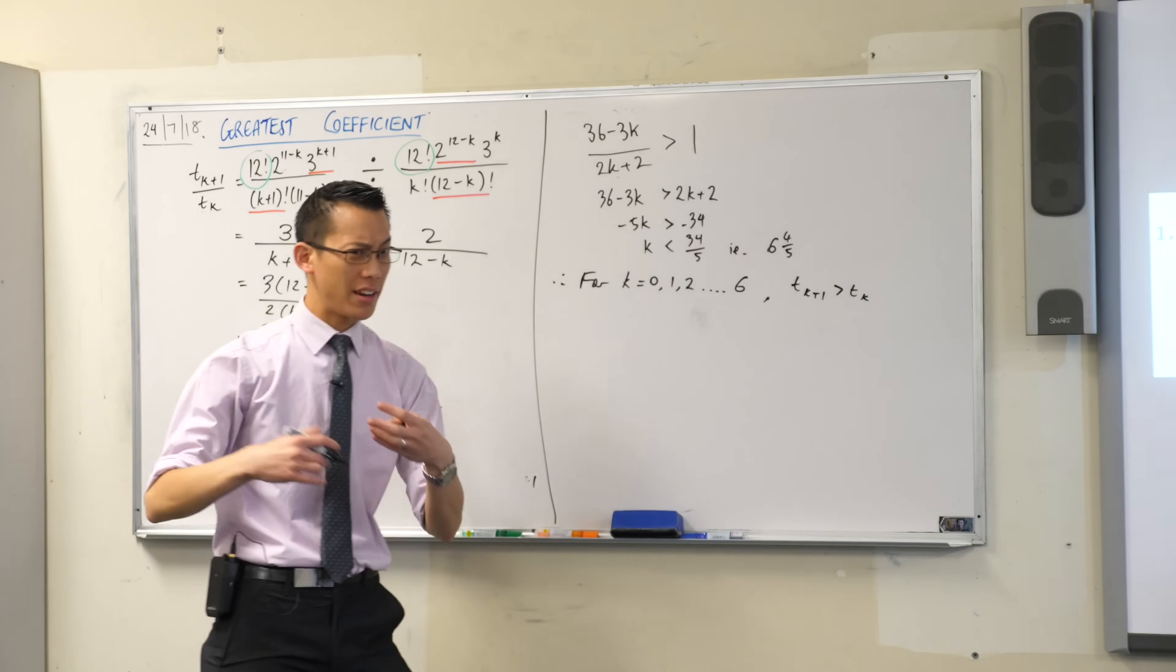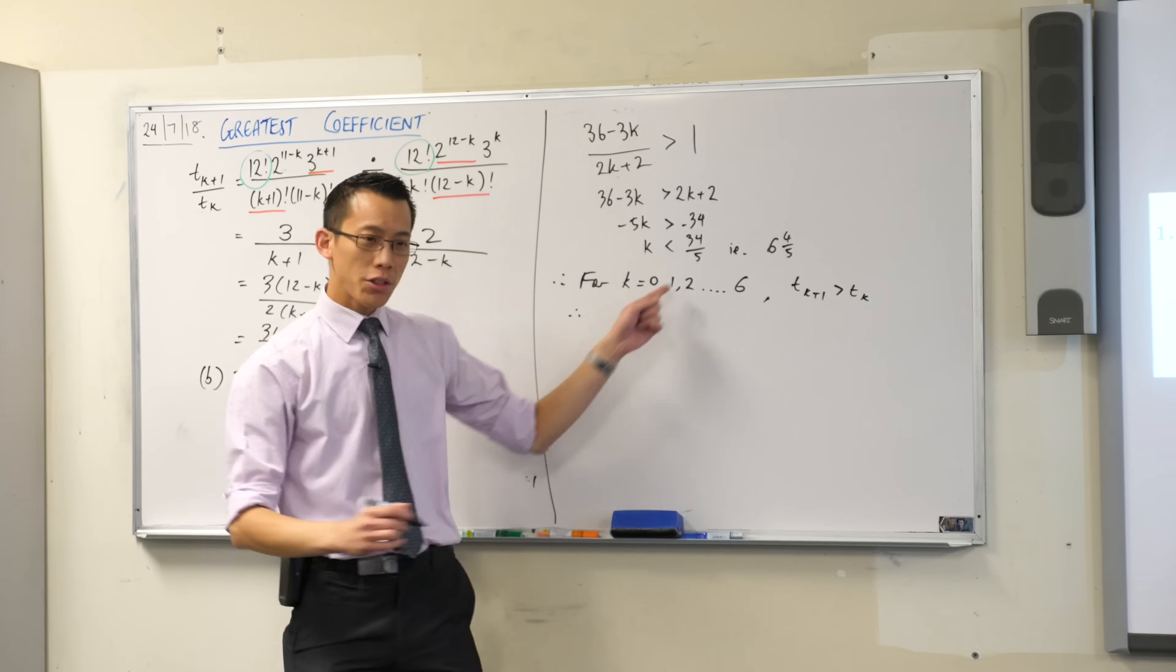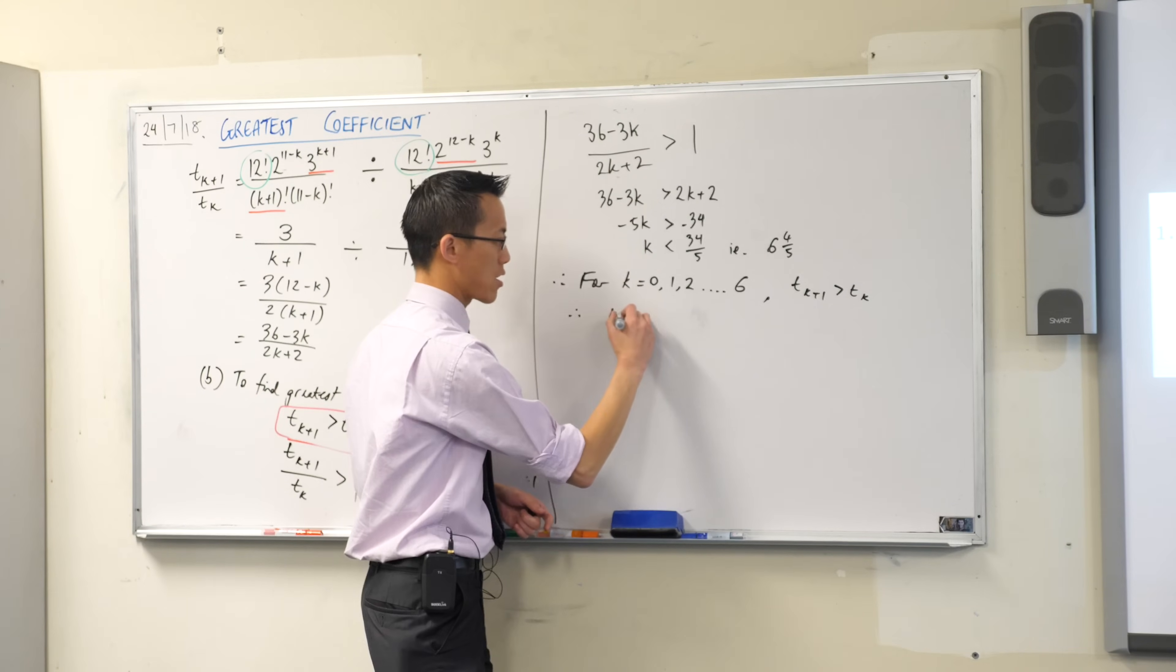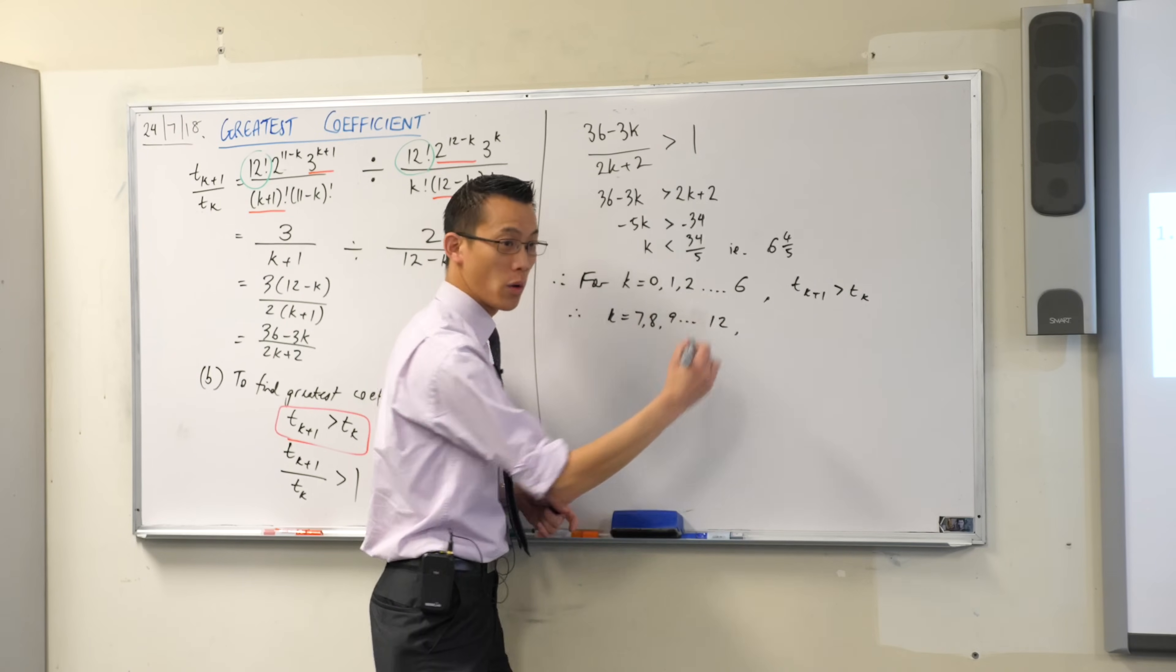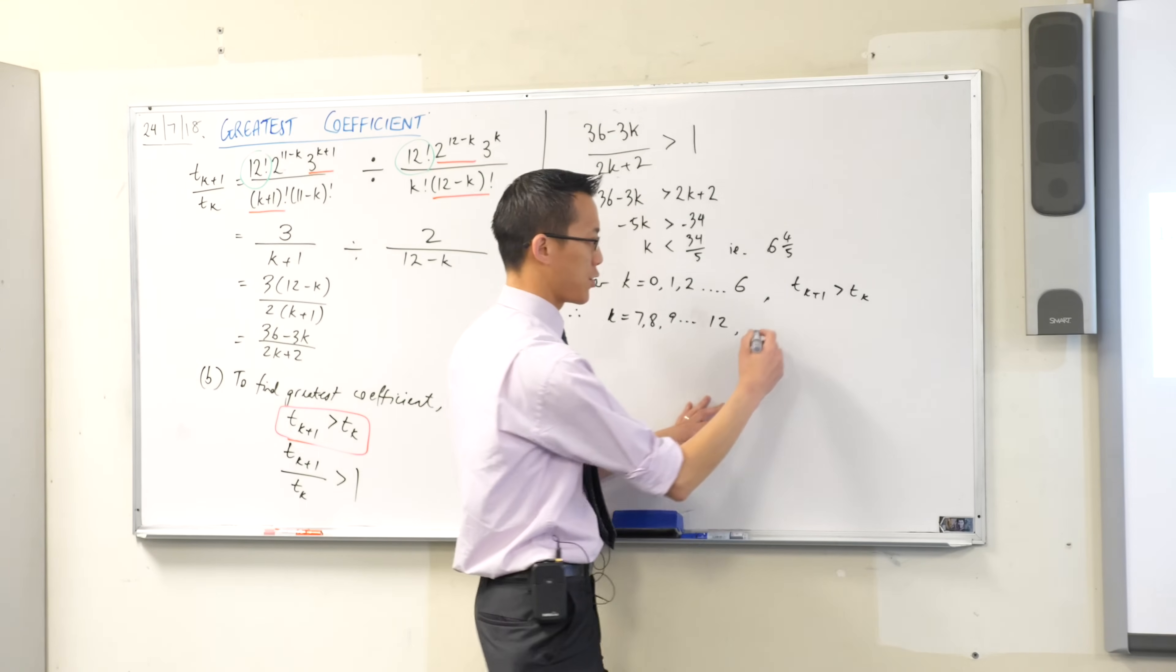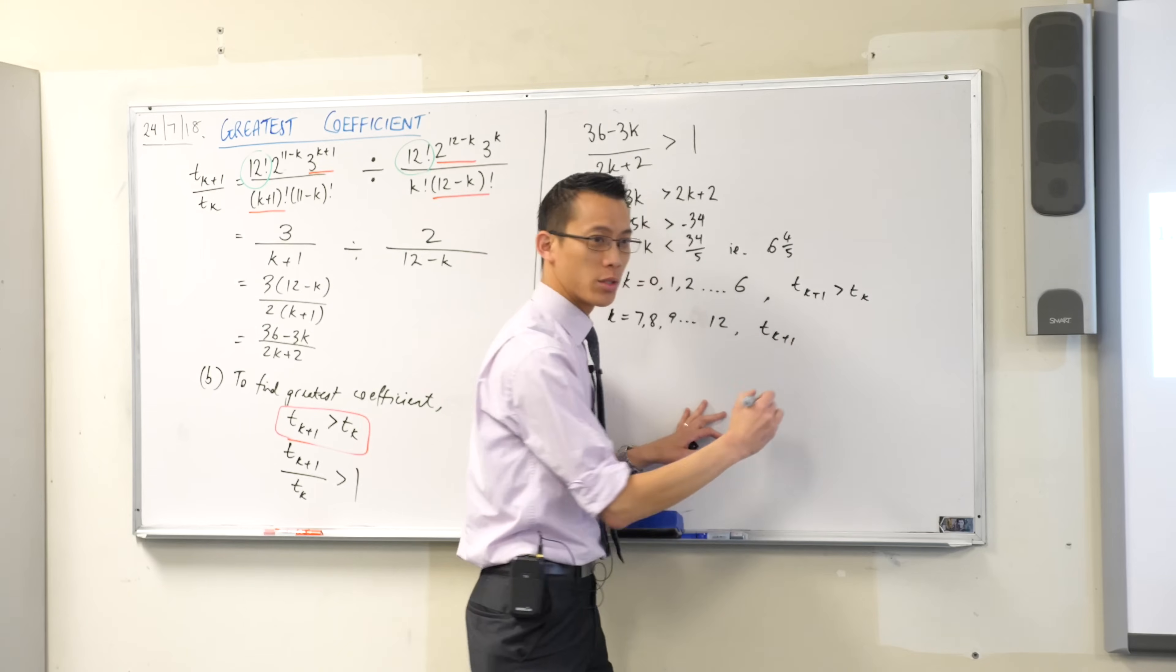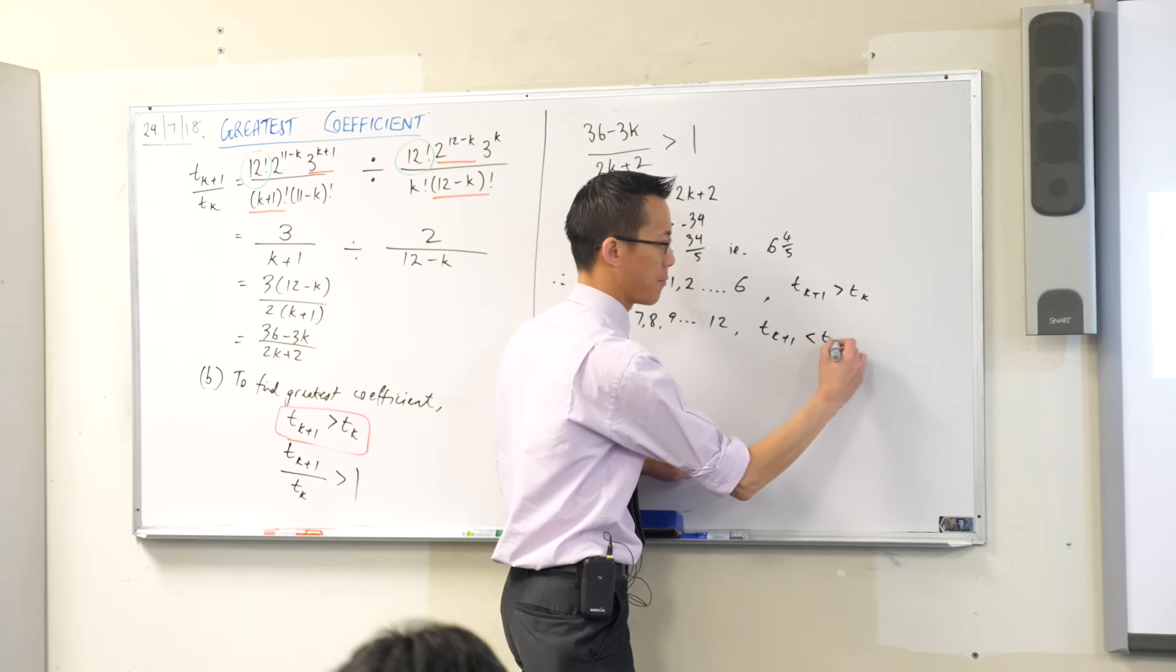Okay, now what I can infer from that, which means, therefore, for all the other values of k, for k equals 7 and 8 and 9 all the way up until 12, this is not true. The opposite is true, right? So the next term afterwards will not be bigger than the term before it. It will be smaller.